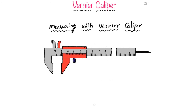Before taking any measurement with the vernier caliper, we must check for zero error. To check for zero error, put the two measuring tips together and check that the main scale zero line coincides with the vernier scale zero line. If these two coincide, there is no error. If they do not coincide, the deviation is the error, and we must account for this error value at the end of the measurement calculation.